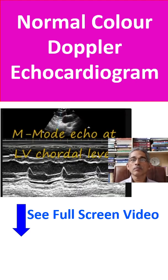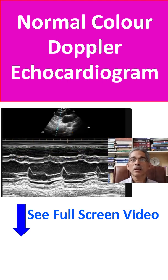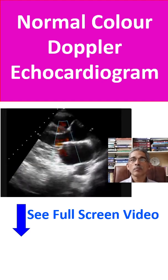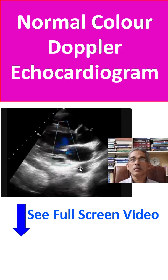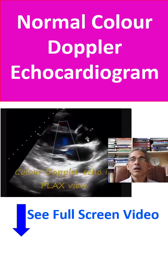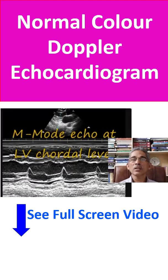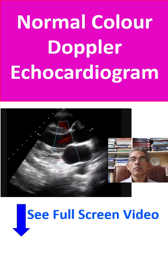Now the color Doppler is applied. In color Doppler, flow away from the transducer is depicted as blue. You can see a mosaic, multicolored pattern here — this is a tiny mitral regurgitation jet, which can be present even in a normal study. This is blue flow again. You can see the ejection into the aorta was seen as red, because it is towards the transducer.